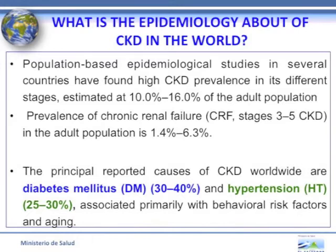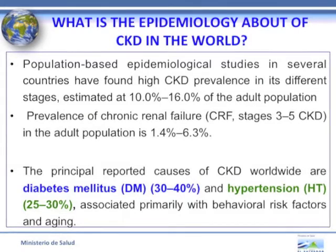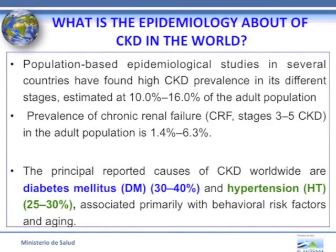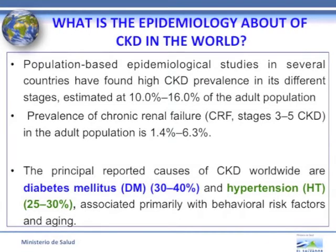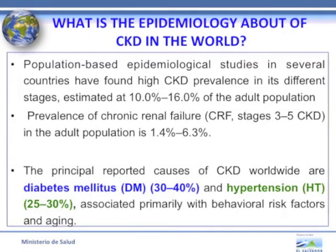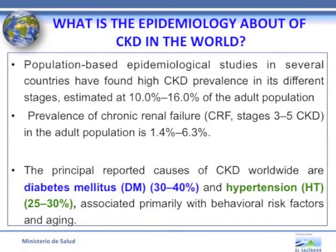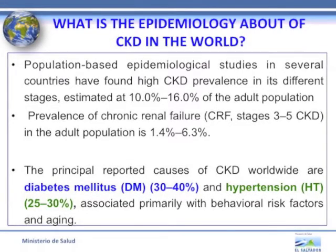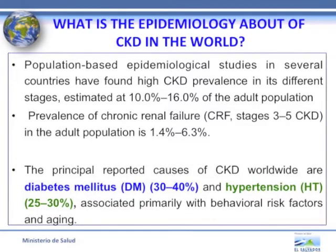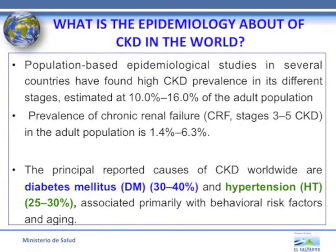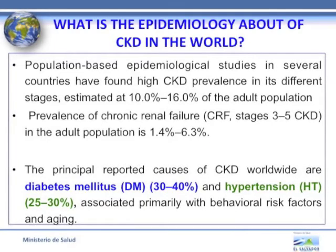Population-based epidemiological studies in several countries have found high CKD prevalence at different stages, estimated at 10% to 16% of the adult population. Prevalence of chronic renal failure in the adult population is 1.4% to 6.3%. The principal reported causes of CKD worldwide are diabetes mellitus at 30% to 40% and hypertension at 25% to 30%, associated primarily with behavioral risk factors and aging.